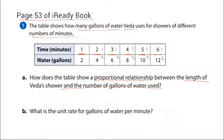So how does it show a proportional relationship? Each pair reduces to the same fraction.